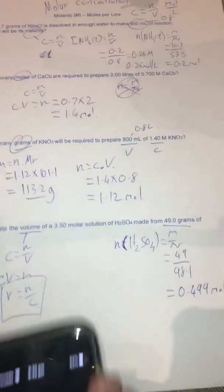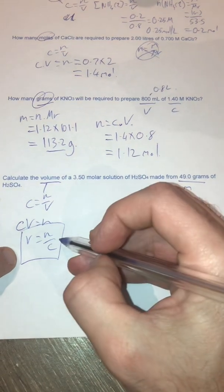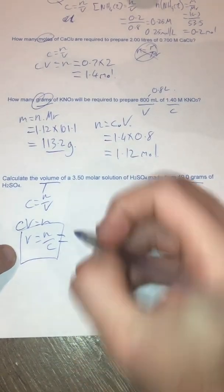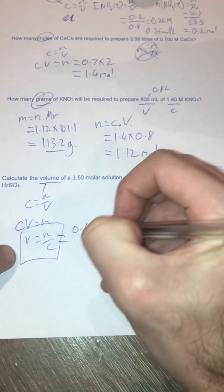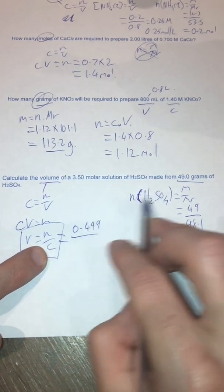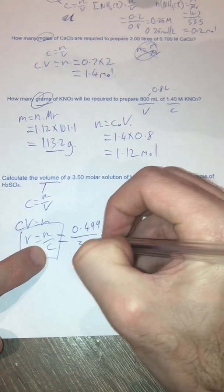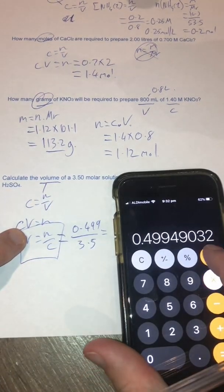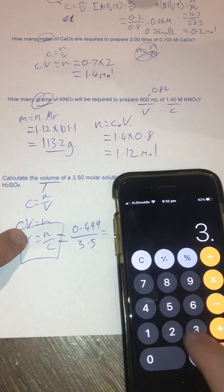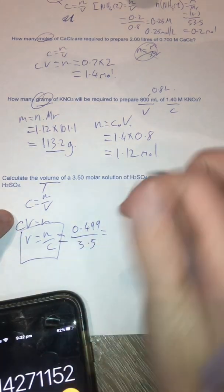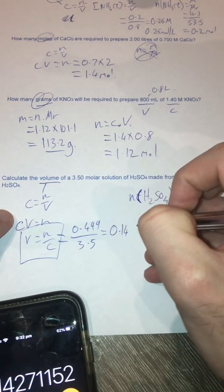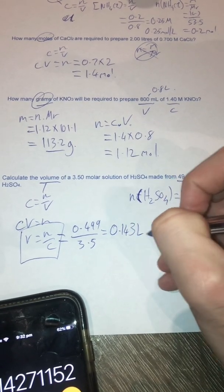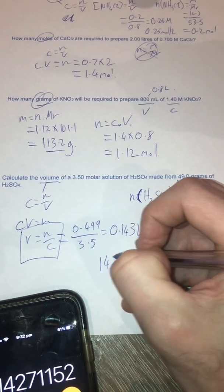And then I've got my number of moles. I bang that straight into my equation over here. So my volume is going to be equal to 0.499 divided by my concentration, which is 3.5. So that's going to be equal to, divide, not times, divide by 3.5 gives me 0.143 liters or 143 ml.